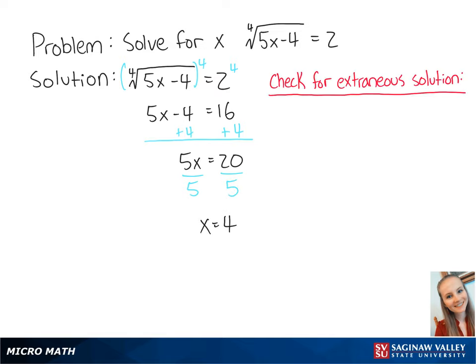Now we have to check to make sure this is correct. We'll plug in x equals 4 into the original equation, giving us the 4th root of 5 times 4 minus 4 equals 2, which gives us the 4th root of 16 equals 2, which is 2 equals 2. This is correct, so x equals 4 is the final answer.